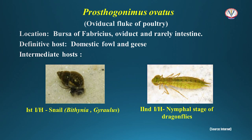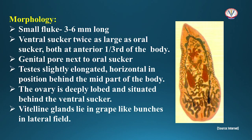Prosthogonimus ovatus, the oviducal fluke of poultry, is located in the bursa of Fabricius, oviduct, and rarely the intestine of domestic fowl and geese. The first intermediate host is a snail of the genus Bithynia or Gyraulus, and the second intermediate host is nymphal stages of dragonflies. This is a small fluke, three to six millimeters long. The ventral sucker is twice as large as the oral sucker, and both are present in the anterior one-third of the body. The genital pore is present next to the oral sucker. Testes are slightly elongated and horizontal, present in the mid part of the body. The ovary is deeply lobed and situated behind the ventral sucker. The viteline glands lie in grape-like bunches in the lateral fields.